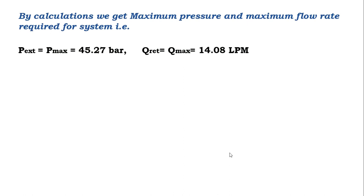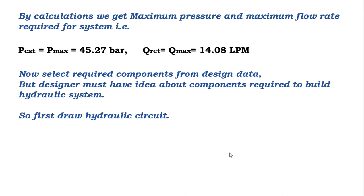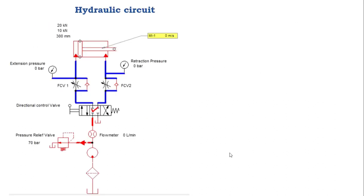Select the required components from the design data, but the designer must have an idea about all components required to build the hydraulic system. First, draw the hydraulic circuit. For this application we need: reservoir, filter, pump, pressure relief valve, direction control valve, flow control valve, and actuators.